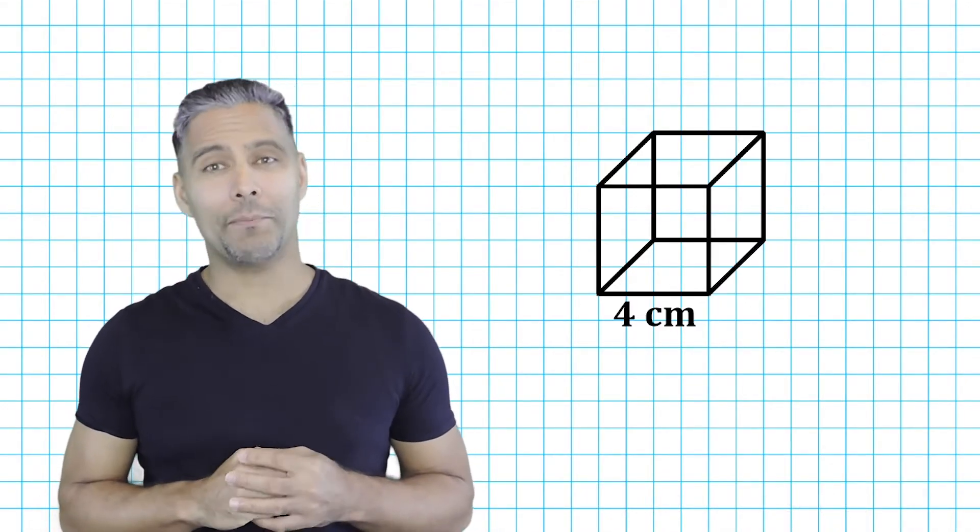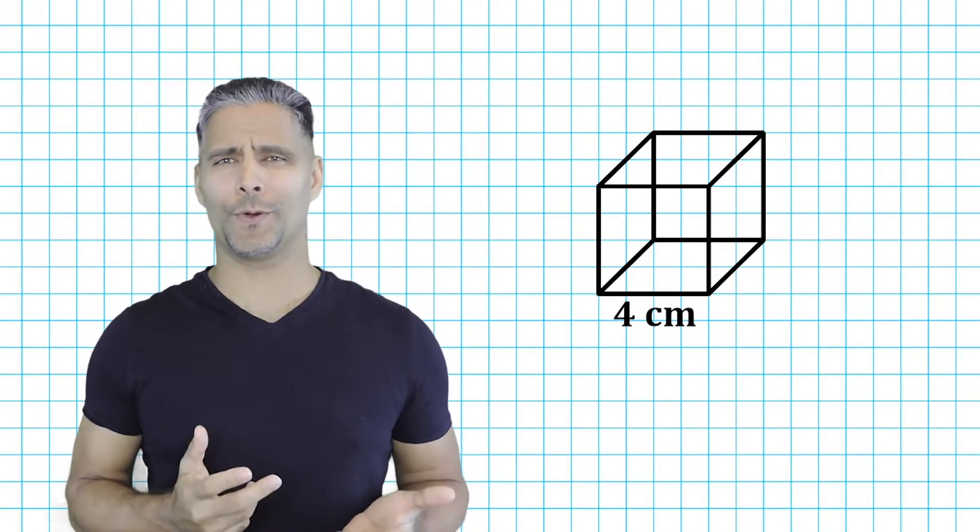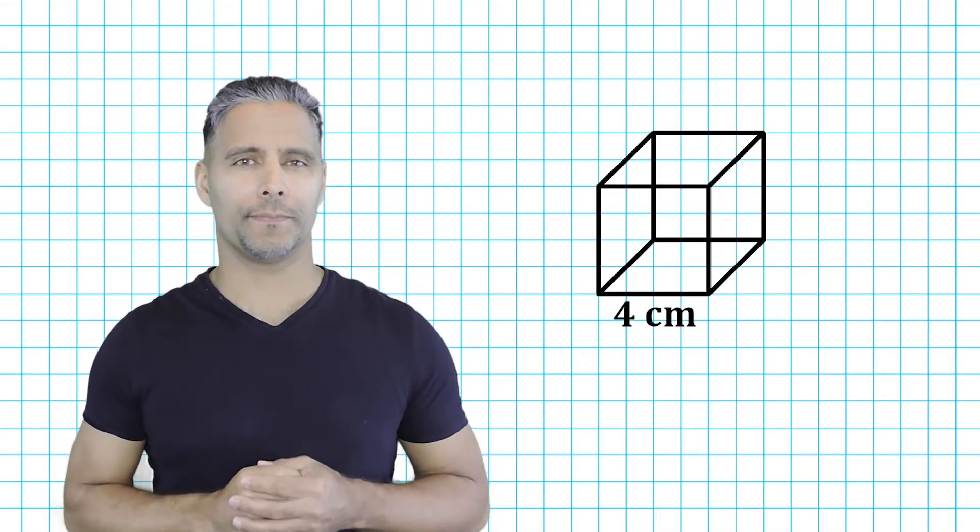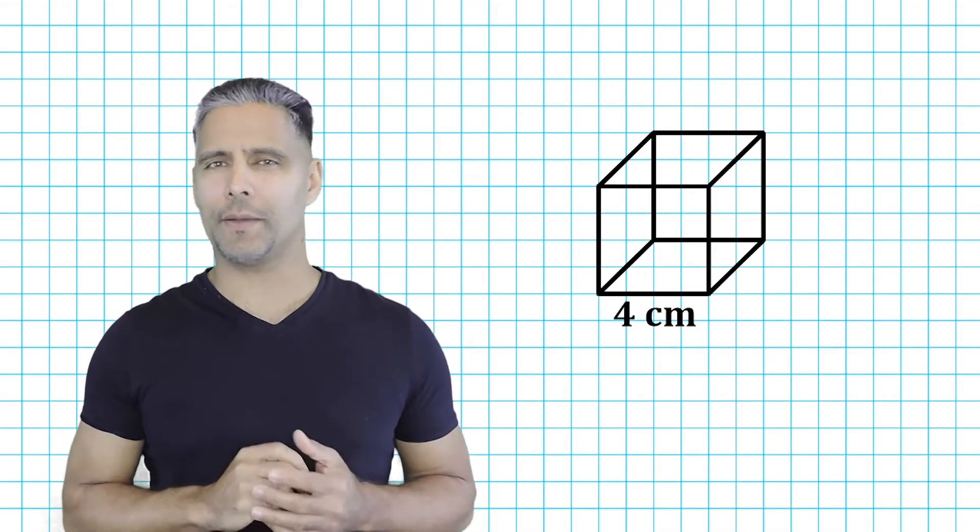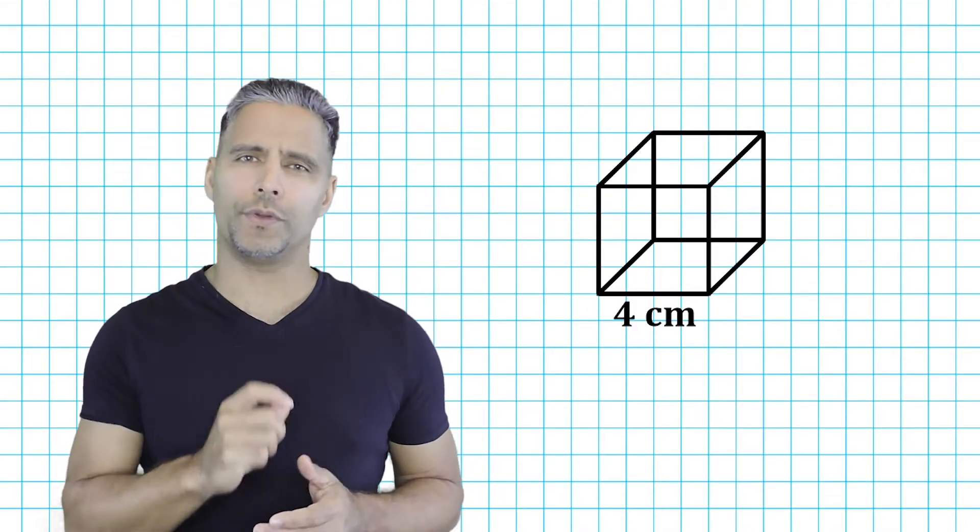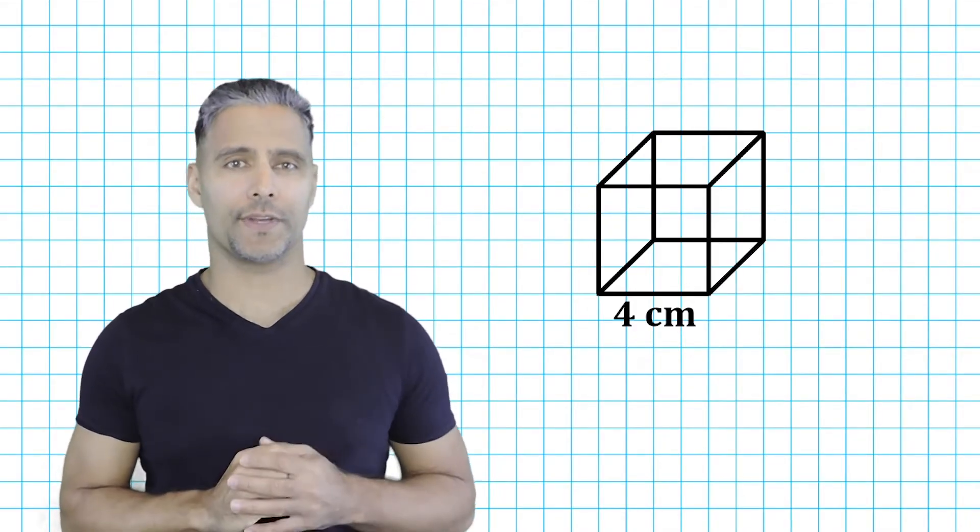For example, we should not multiply 4 times 4 times 4. That would give us the volume of this cube and not its surface area. The volume measures how many cubic units it takes to fill an object. Surface area measures how many square units it takes to cover the surface of an object.